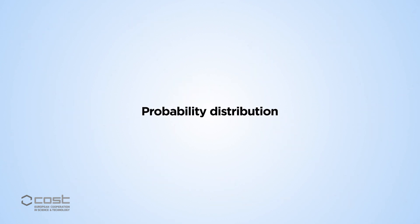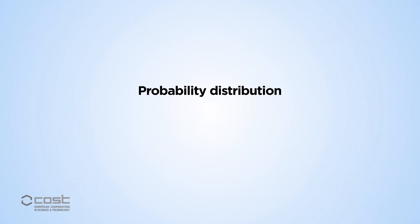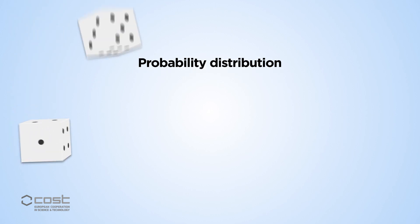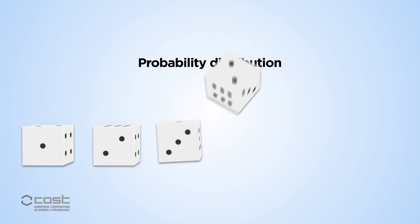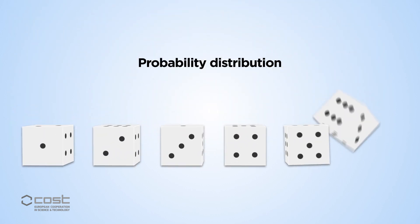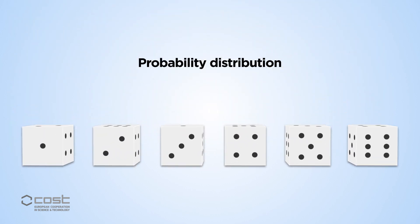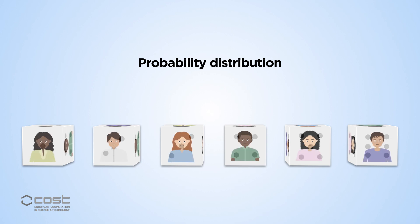A probability distribution assigns a probability to a particular outcome. For example, when rolling a die, each outcome has a probability of 1 out of 6. These probability distributions also describe networks.